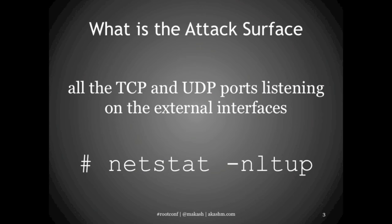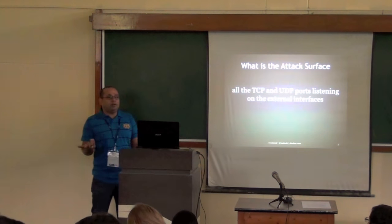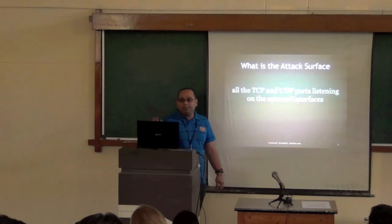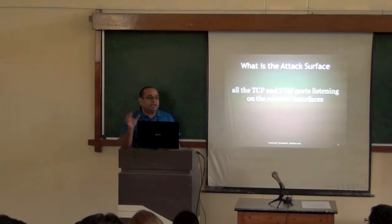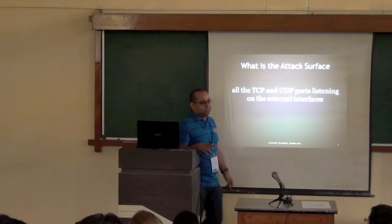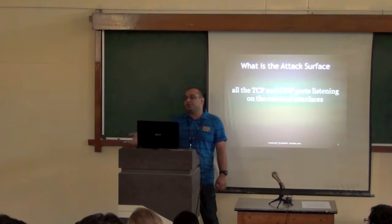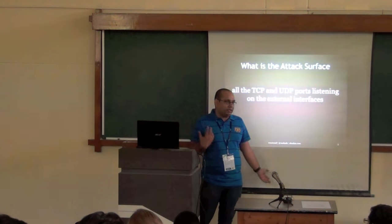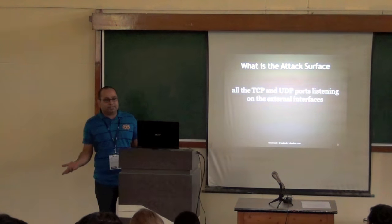So what do I mean by reduced attack surface in Linux? The first attack surface when talking about a Linux server is all the TCP and UDP ports listening on the external interfaces — the external-facing IP addresses that someone can use to reach your machine, whether via a DNS A record or someone doing an NMAP scan.